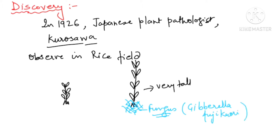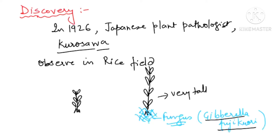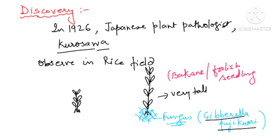They found that because of this fungus infection the plant was growing very tall. Later on they gave a name to this disease — Bakanae disease — which is also known as foolish seedling of rice.